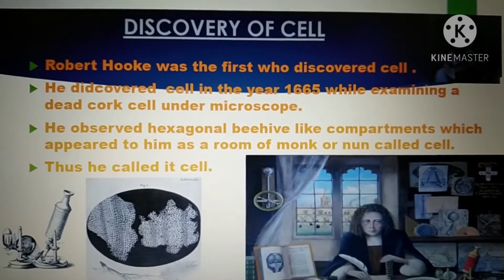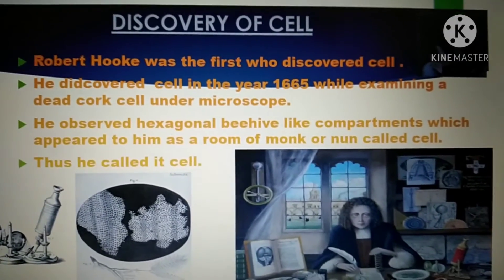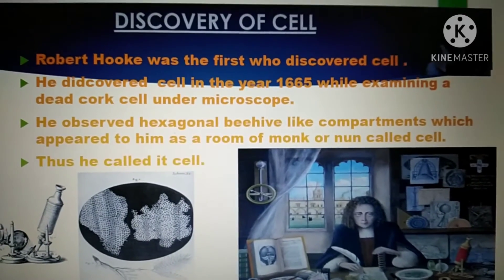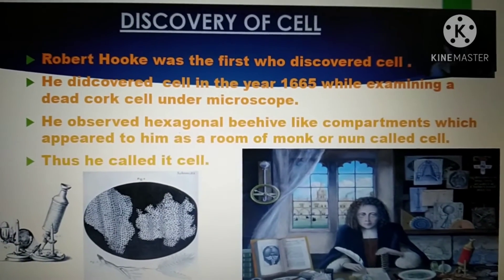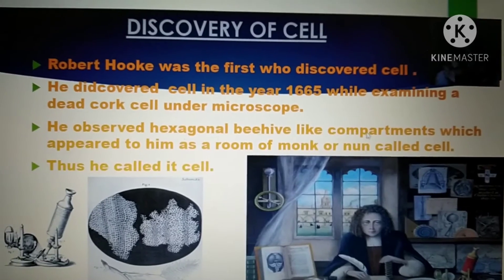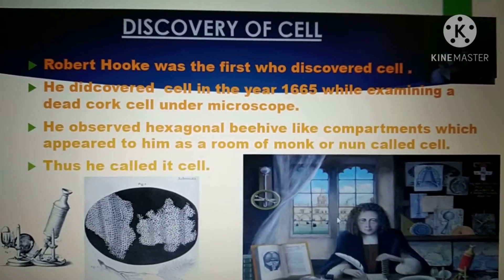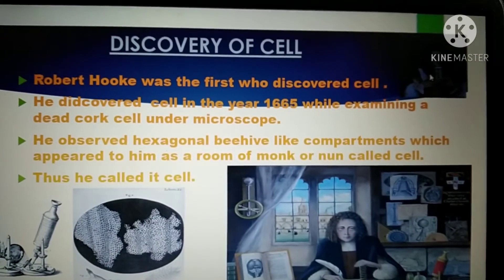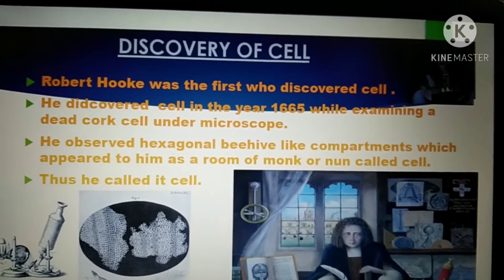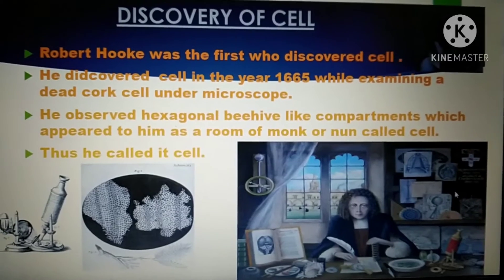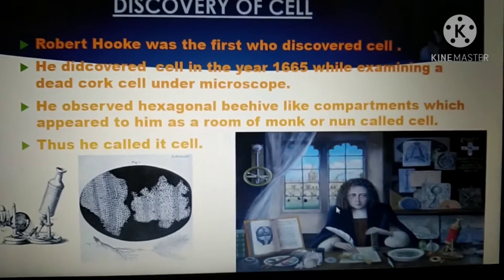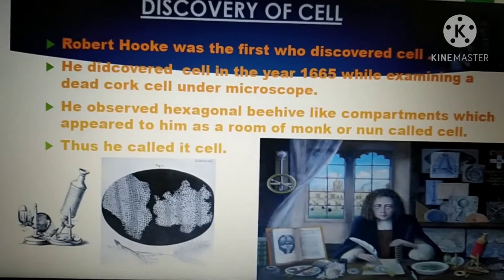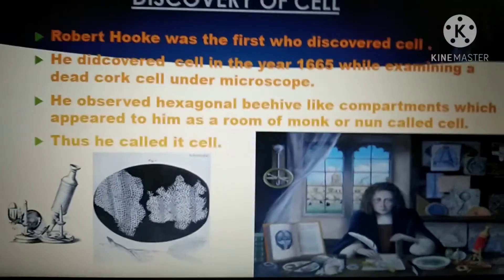If you have difficulty understanding my English, please comment and I will try to be bilingual — explaining concepts in both Hindi and English. This is the picture of Robert Hooke; you can see he is doing work at a microscope. Although he is said to be a physicist, he made the first discovery of the cell and was the first one to propose the concept of a cell.